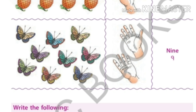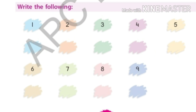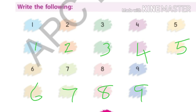Now write the following. One, two, three, four, five is given here. You are repeating the same thing on the line given below. The place is given, you are writing the same thing. One, two, three, four, five, six, seven, eight, nine.